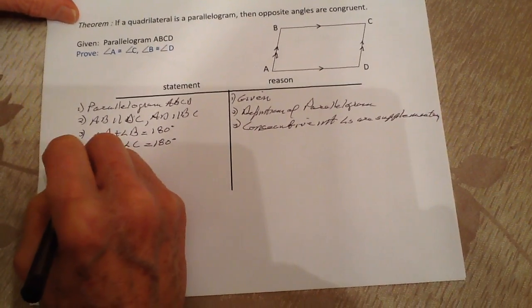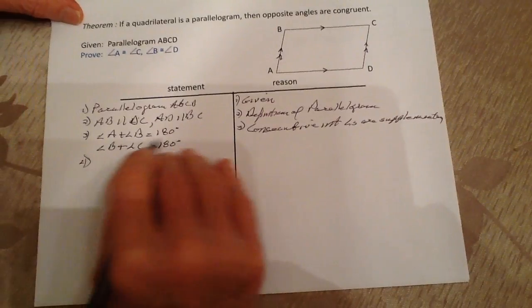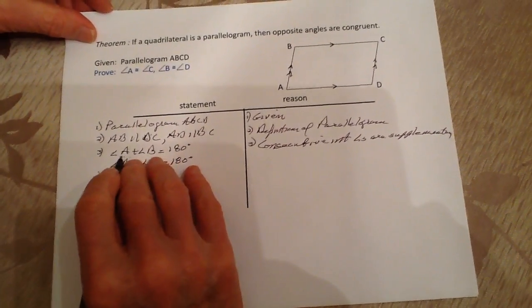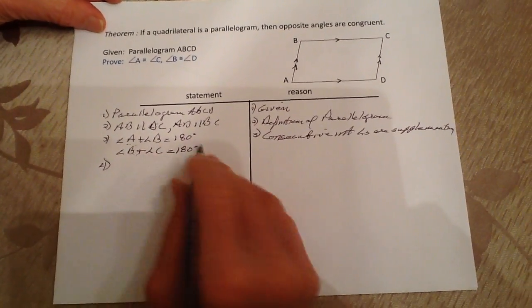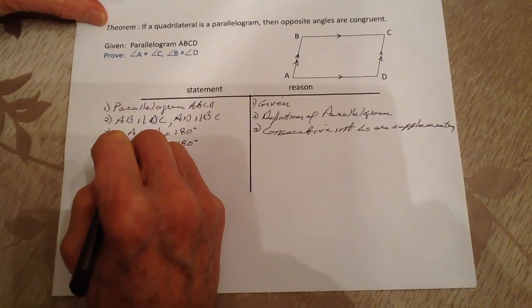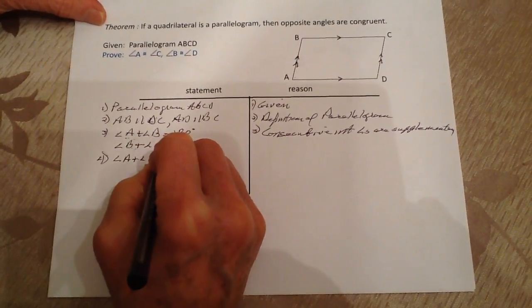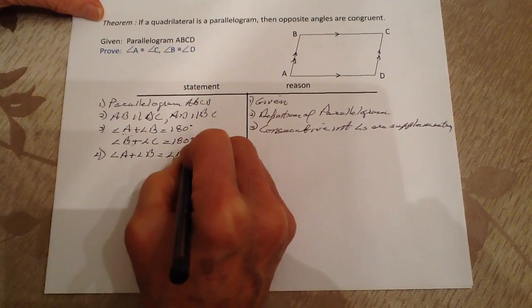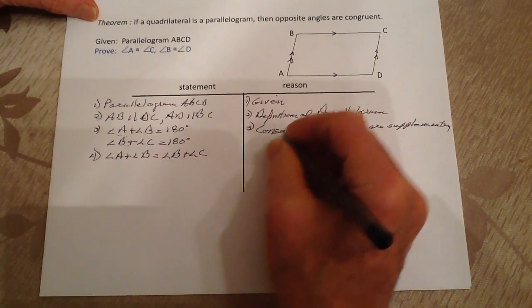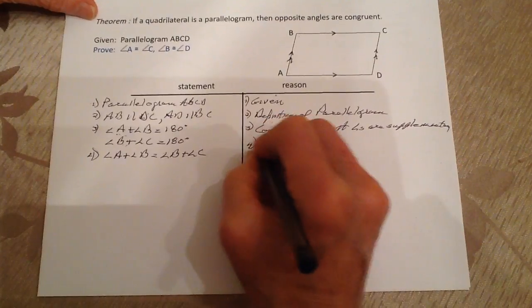Now for statement four, I'm going to substitute. We know that angle A plus angle B is going to equal angle B plus angle C because of substitution.